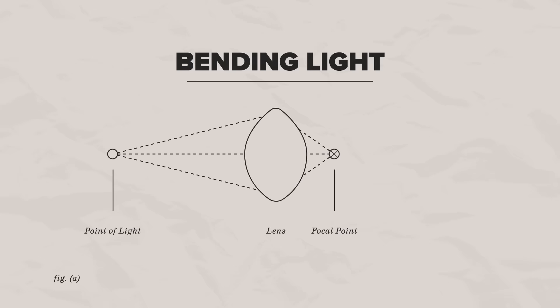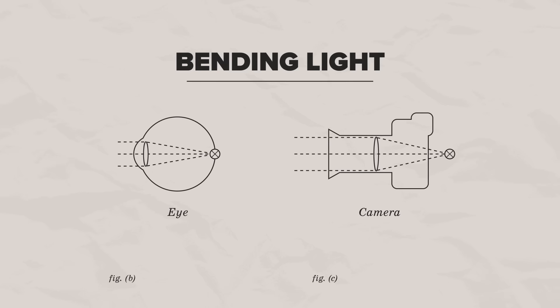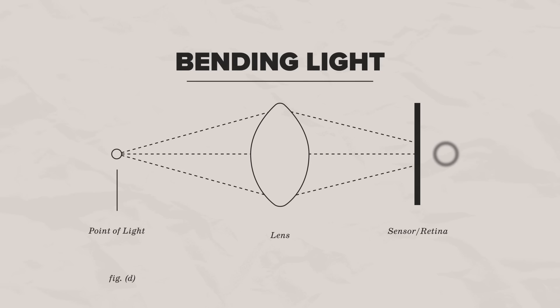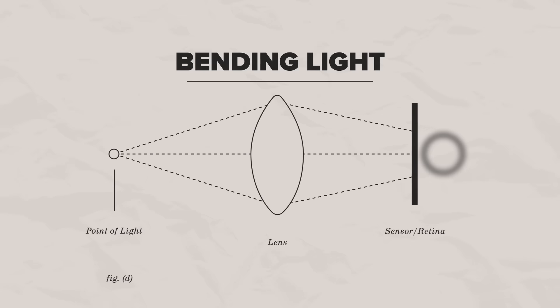The lens in your eye and the camera work in different ways to focus images. Your eye physically changes the shape of the lens while a camera moves it. Both alter the point where light from different distances comes together. When the lens is out of focus, light rays from a fixed point don't come together exactly on the sensor or our retina.